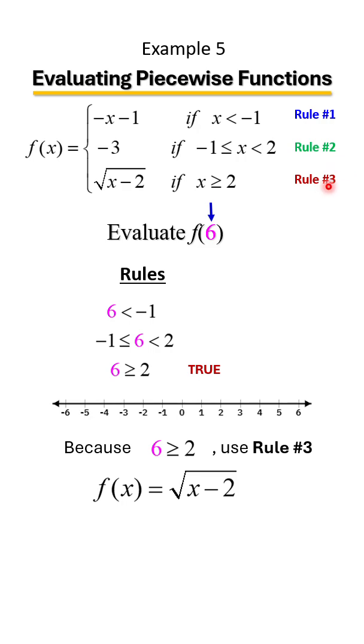we're going to plug it into the third function because of rule 3. We're going to replace it with a 6. Let's do the subtraction underneath. 6 take away 2 is 4. We still have to find the square root though. So the square root of 4 we know to be 2. Therefore, f of 6 equals 2.